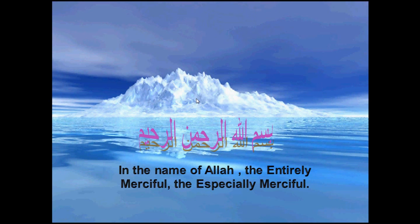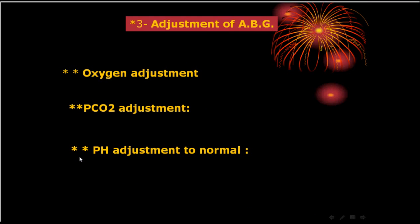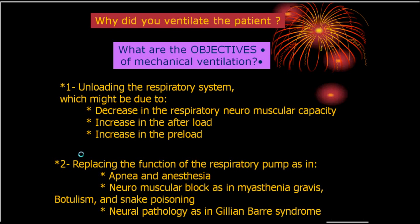Let us start the second part of weaning. The problem of weaning: you have to ask yourself why did you ventilate the patient? The objectives of mechanical ventilation are: number one, to unload the respiratory system; number two, to replace the respiratory system; number three, to adjust the ABG.